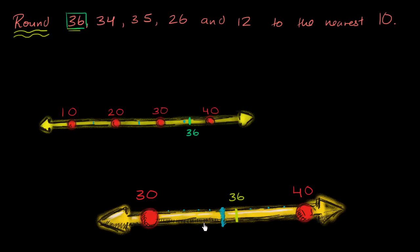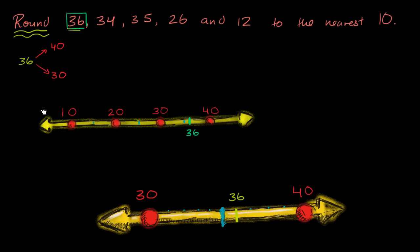So if we want to round to the nearest multiple of 10, what are the two possibilities? I could take 36 and round up to the multiple of 10 above it, which is 40. Or I could round down to the multiple of 10 below it, which is 30. So I need to figure out which of these numbers it is closer to.